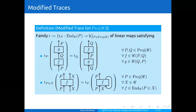The last ingredient I need in my algebraic setup is the modified trace, which was discussed at length last week. A modified trace on the full subcategory of projective objects of C is a family of linear maps whose sources are endomorphisms of projective objects and whose targets are the base field, collectively denoted T.